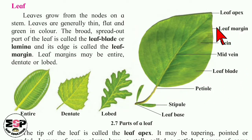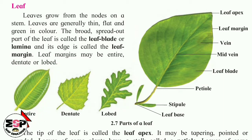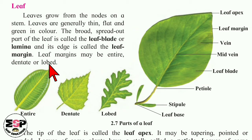See here, it is denoted as leaf margin. Now, leaf margins may be entire, dented or lobed. See here — pictures of the entire leaf margin, then dented and lobed are shown to you. Entire leaf margin means it starts from here and goes straight till the end of the leaf — like this, a straight border is called entire.